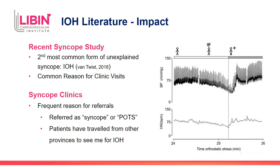A recent study by Van Twist and colleagues looked at referrals to syncope clinic for unexplained syncope and what the underlying cause was. Initial orthostatic hypotension, when thought about and investigated, was the second most common cause for these referrals. Anecdotally, this is actually a very frequent cause of referrals, but the reason it's not recognized that way by most people is that referrals never say 'please see this patient for initial orthostatic hypotension.' These patients are referred as having syncope, sometimes vasovagal syncope, or even referred for POTS because of the high initial tachycardia that recovers.